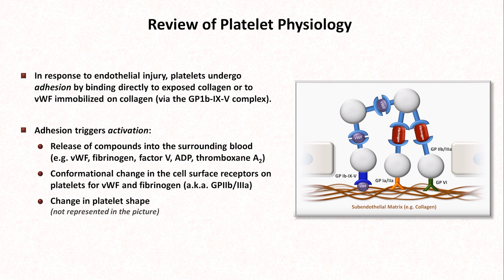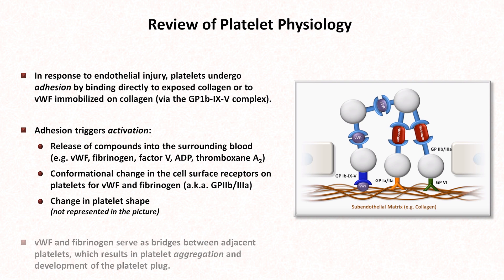This is not represented in the picture. Activation is followed by aggregation, in which von Willebrand factor and fibrinogen serve as bridges between adjacent platelets, resulting in the platelet plug. The platelet plug will then develop into a blood clot with the assistance of the coagulation cascade.